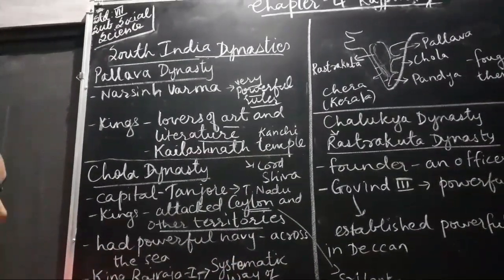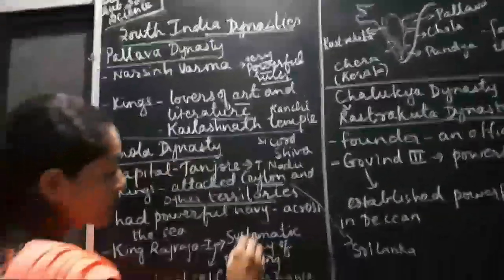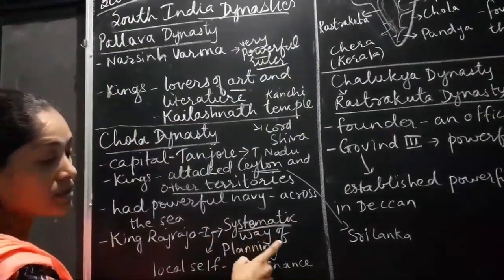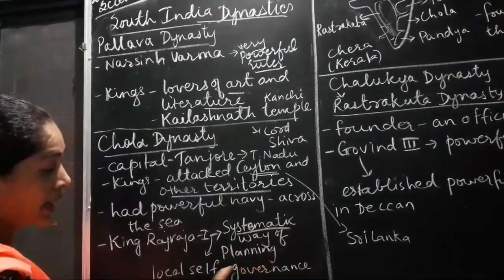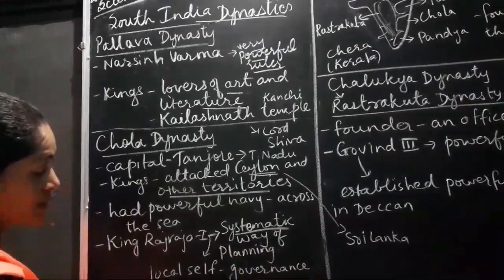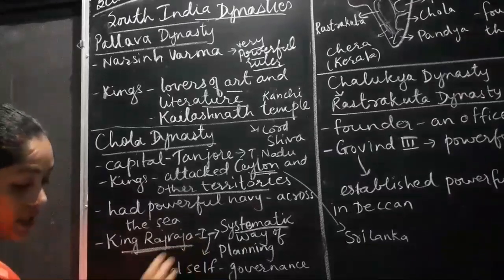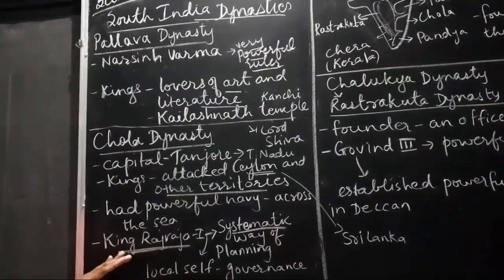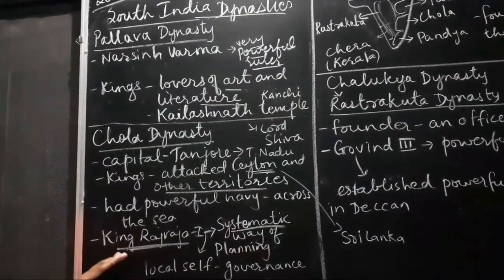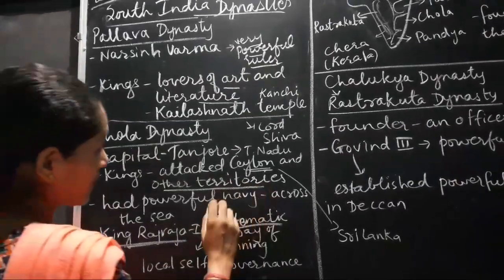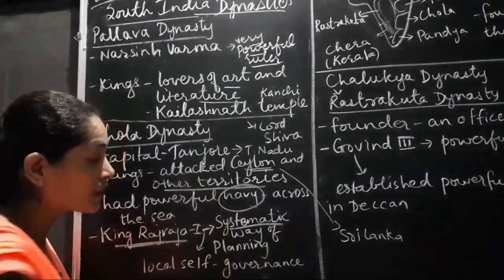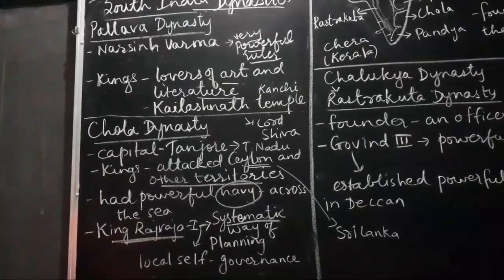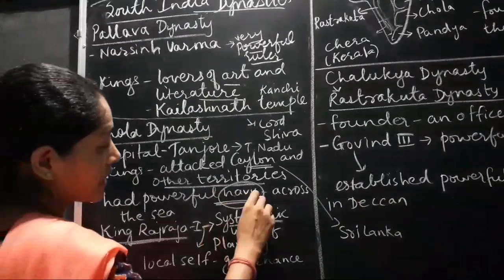King Raj Raja I was a very powerful king who started a systematic way of planning and also local self-government. During Raj Raja I, the kingdom was at its zenith and he is the first ruler to use a navy. During that time, no other kingdom had this navy facility.